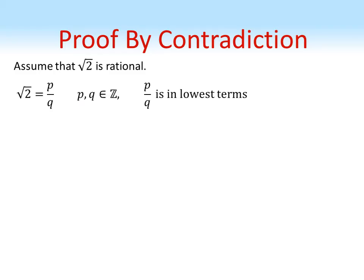If this is true then we can write root 2 as a fraction, p over q, where p and q are whole numbers and p over q is in its lowest terms. It's a fraction that can't be simplified any further.